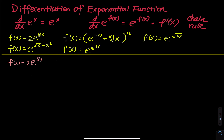So no matter how many times you differentiate e to the x, the answer is just e to the x. If there is a function inside the exponential, like e to the f(x), the derivative is: you write the entire thing first, and then multiply by the derivative of f(x) using the chain rule.